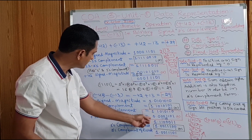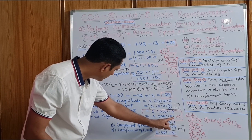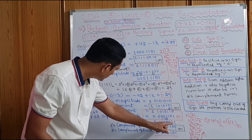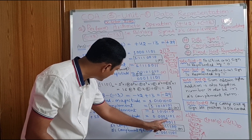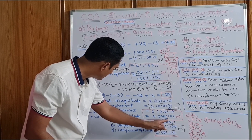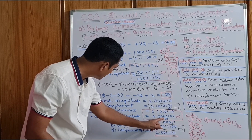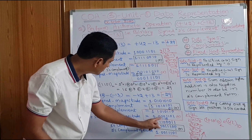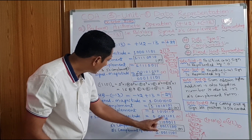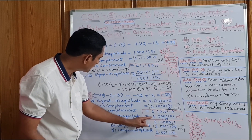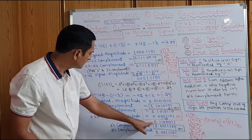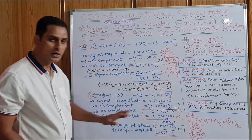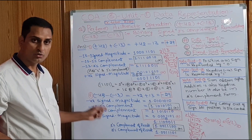Now we need to add these two: 42's 2's complement and +13's signed magnitude. Adding: 0, 1, 1, 0, 1, 0, 1, 1 with 0, 0, 0, 0, 1, 1, 0, 1. With carries: the result is 1, 1, 1, 0, 0, 1, 1, 1, 0, 1. This is the number. This is the result.